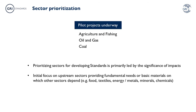As I mentioned, we currently have pilot projects underway. These will produce standards for agriculture and fishing, oil and gas, and coal. Prioritising sectors for developing standards is primarily led by the significance of impacts. The higher the impact a sector has on sustainable development, the higher its priority. In addition, our initial focus will be on upstream sectors that provide fundamental needs or basic materials on which other sectors depend. Ultimately, the aim is for the GRI Sector Programme to cover all high-impact sectors.